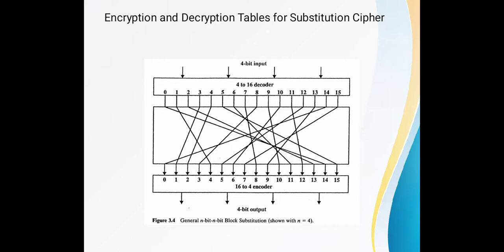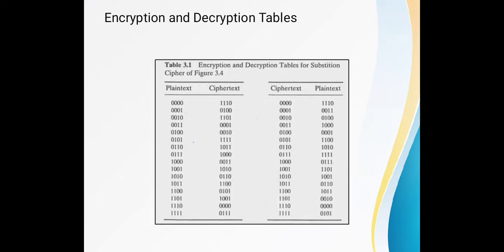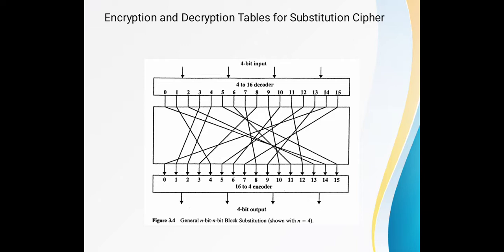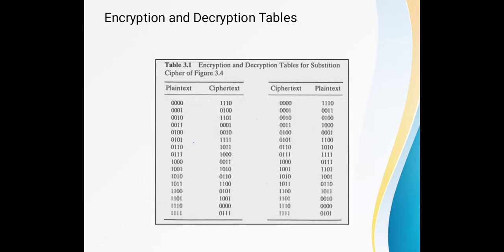This is the concept of encryption and decryption for the substitution table, which is very important to understand. The mapping — for example, 0 maps to 14, 1 maps to 4, 2 maps to 13 — can be understood using the encryption and decryption table for the substitution cipher. The input is plain text and outputs are cipher text, with the first table showing encryption and the second showing decryption.